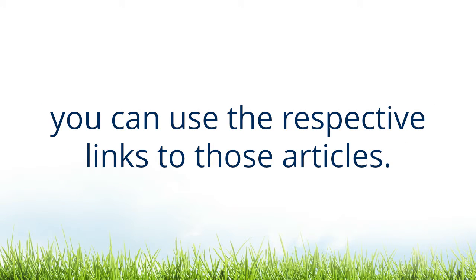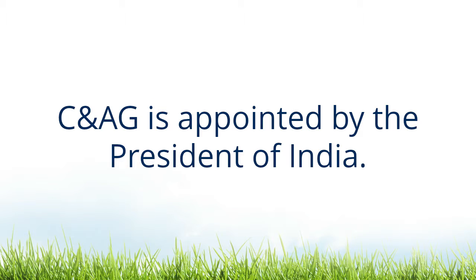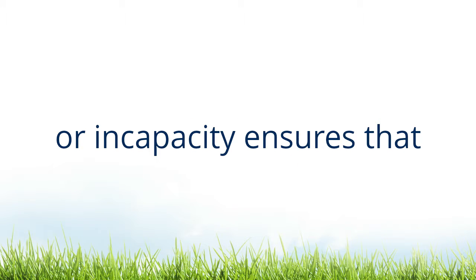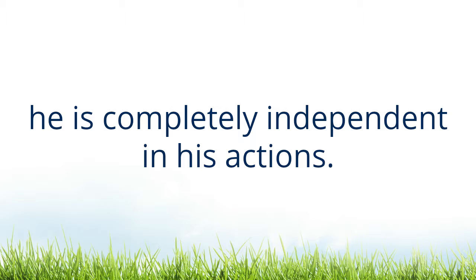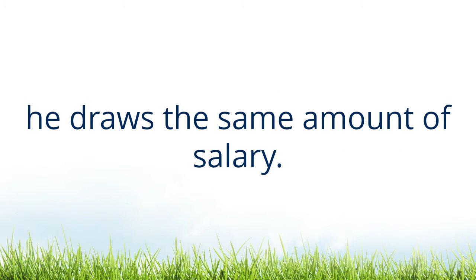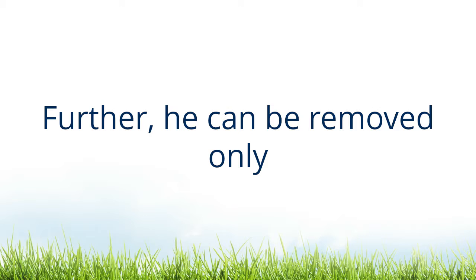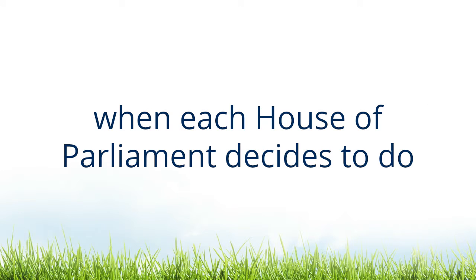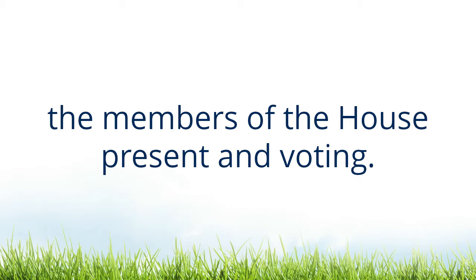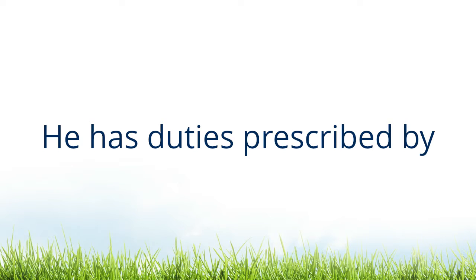CAG is appointed by the President of India. This, along with the fact that he can only be removed on the ground of proven misbehavior or incapacity, ensures that he is completely independent in his actions. In short, the Constitution recognizes CAG as a judge of the Supreme Court. He draws the same amount of salary, and further, he can be removed only when each House of Parliament decides to do so by a majority of not less than two-thirds of the members of the House, present and voting.